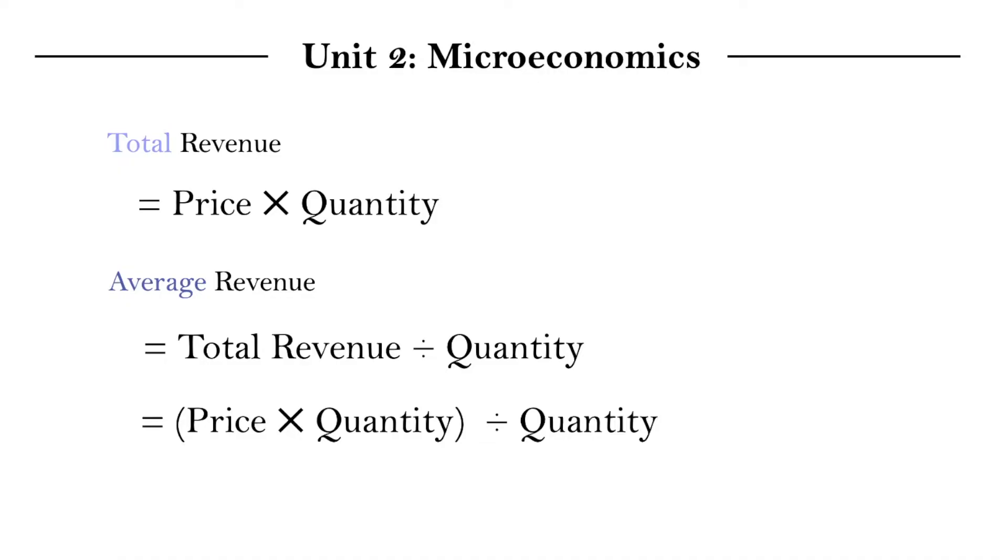So total revenue, as I assume many of you already know, is just the price multiplied by the number of goods sold. Now what would our average revenue be? Well, average should be the total value divided by quantity, so it becomes total revenue divided by quantity. And if we were to swap out the total revenue for the equation we had above, we get price times quantity divided by quantity, and turns out your average revenue is no different to your price.